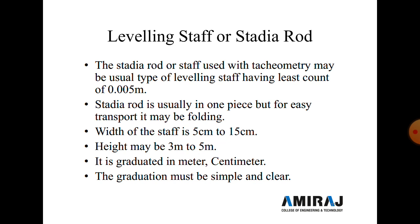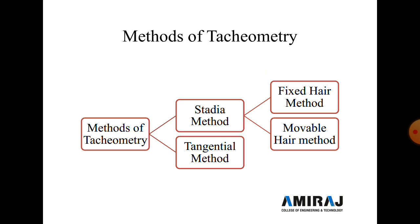The black and white strips each indicate half a centimeter (5 mm) — one black strip and one white strip, each 5 mm thick, are provided on the leveling staff. The main two methods of tacheometry are: the stadia method and the tangential method.